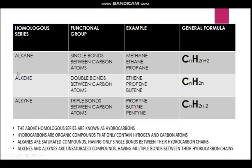The next one is alkene, which is characterized by double bonds between the carbon atoms. The examples are ethene, propene, and butene. You can also see the suffix is the suffix of the chemical names. The general formula is CnH2n, meaning for whatever number of carbons you have, you have double the number of hydrogens.